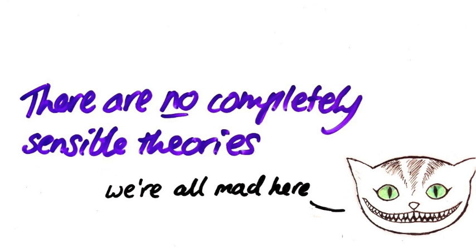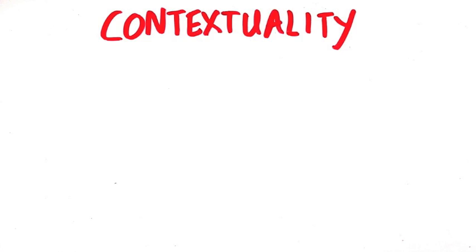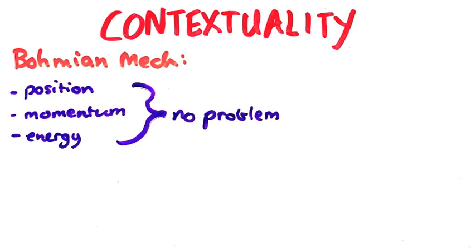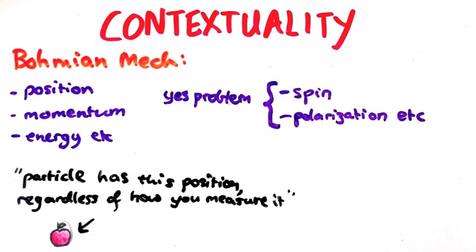There's a lot of hype about this contextuality, but I'm not sure how seriously we should take it. You see, this issue doesn't come up at all when we're talking about most variables in Bohmian mechanics, like position, momentum and energy. It's perfectly legitimate to say that this particle has this position, regardless of how you measure it.